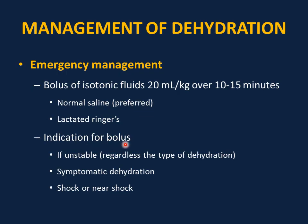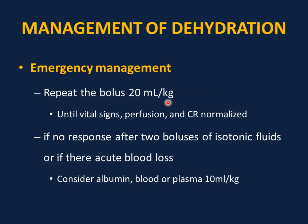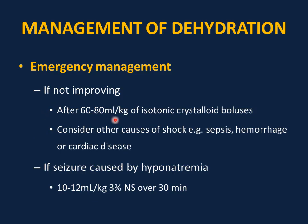Give a bolus if the child is unstable, has symptomatic dehydration, shock, or near-shock, regardless of dehydration type. Repeat the bolus of 20 ml per kg until vital signs, perfusion, and capillary fill normalize. If there is no response after two isotonic fluid boluses or if there is acute blood loss, use colloid fluids such as albumin, blood, or plasma — 10 ml per kg. If the child is not improving after 60–80 ml per kg of isotonic crystalloid boluses, consider other causes of shock such as sepsis, hemorrhage, or cardiac disease. For seizures due to hyponatremia, give 10–12 ml per kg of 3% normal saline over 30 minutes to stop the seizure.